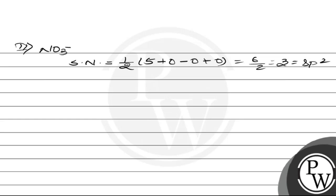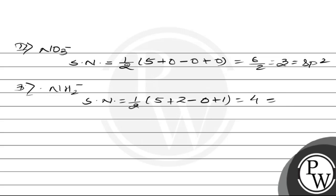So the hybridization of NO₃⁻ is sp2. The third species is NH₂⁻. The steric number of NH₂⁻ is calculated as half the valence electrons of N, plus the number of monovalent atoms (2), minus cationic charge, plus anionic charge, giving 4. This corresponds to sp3 hybridization.